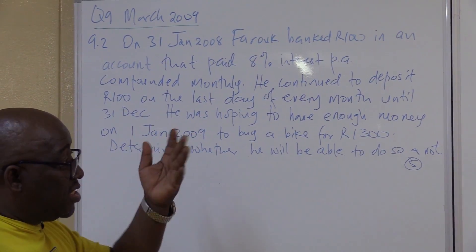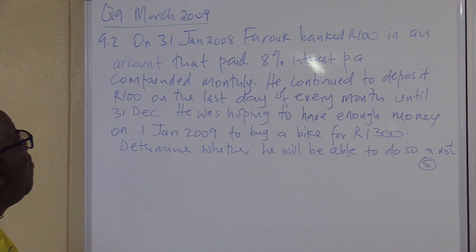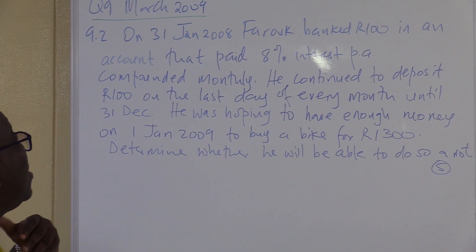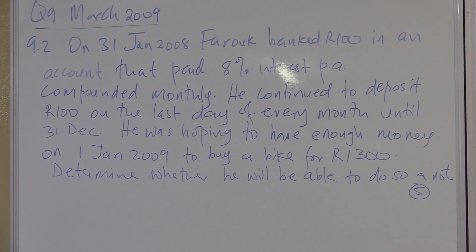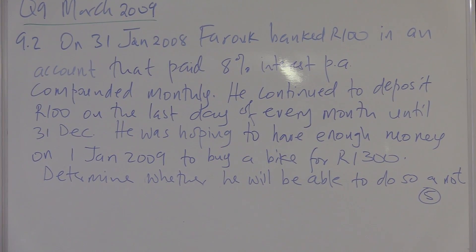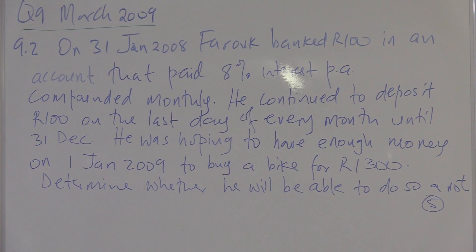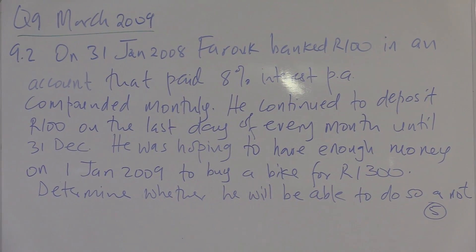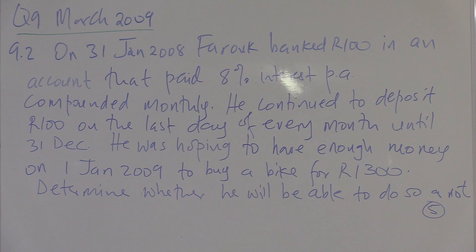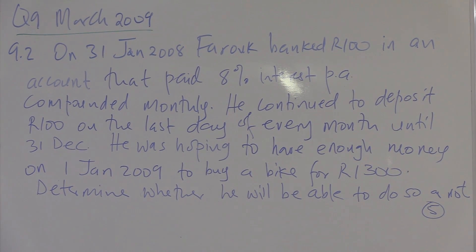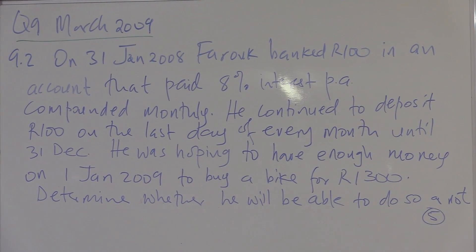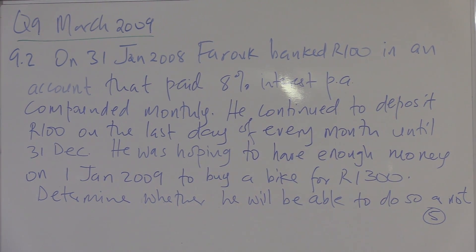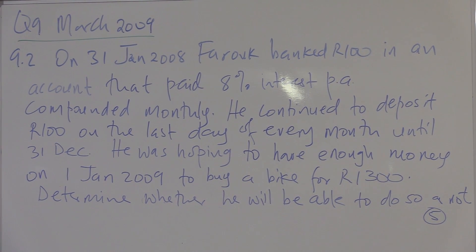This is how this section was set in March. This was the supplementary exams in 2009, question 9. On 31 January 2008, Farouk banked 100 rand into an account that paid 8% interest per annum compounded monthly. He continued to deposit the 100 rand on the last day of every month until 31 December. He was hoping to have enough money on 31 January 2009 to buy a bike worth 1,300 rand. Determine whether Farouk will be able to do so or not.